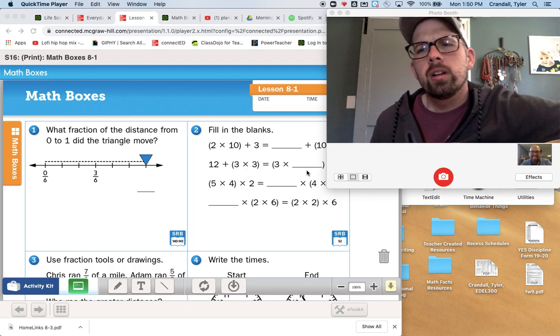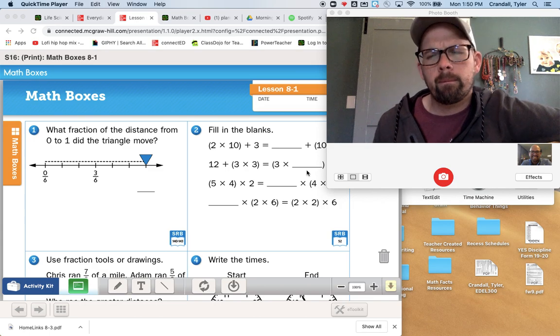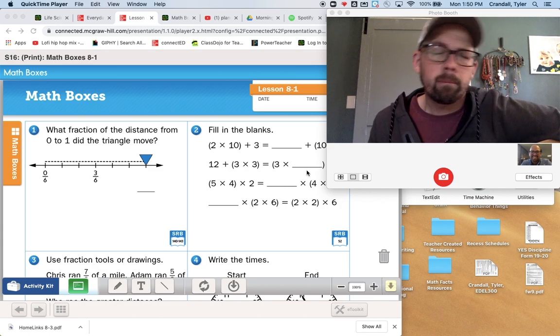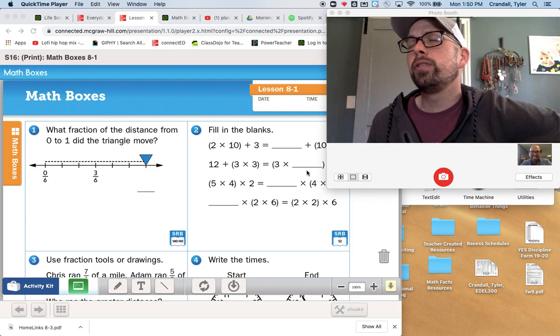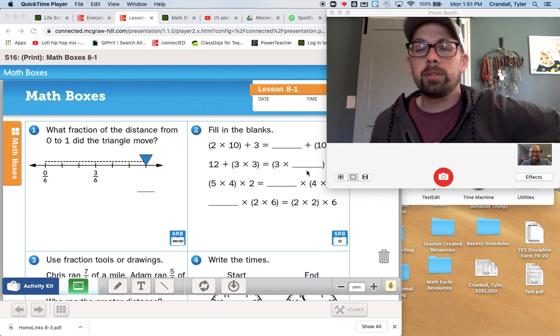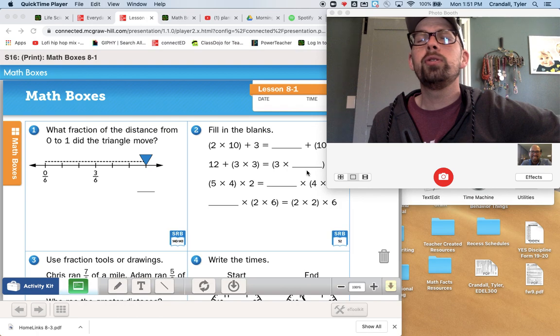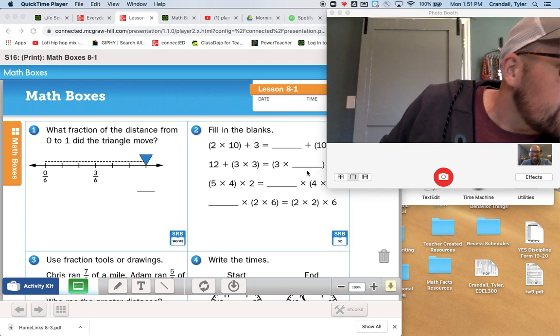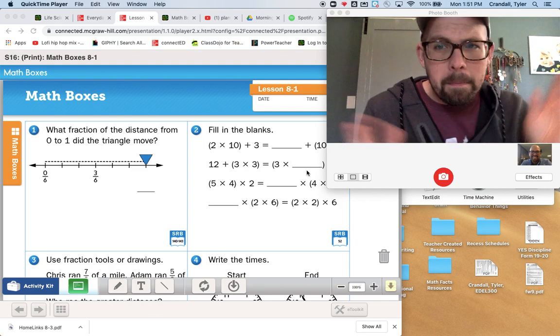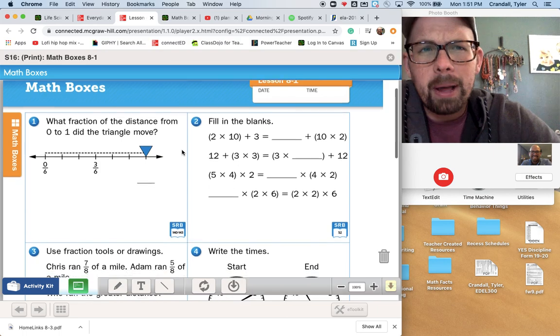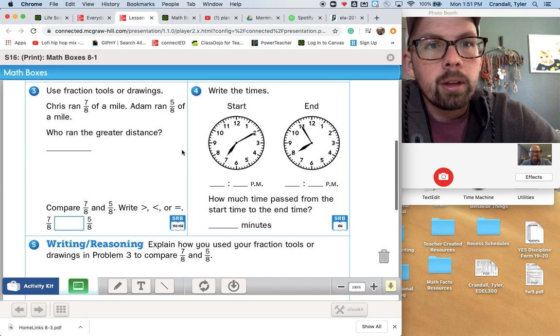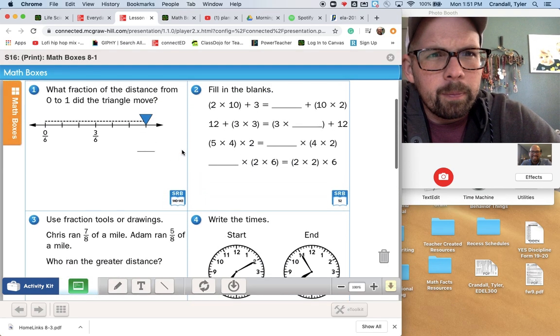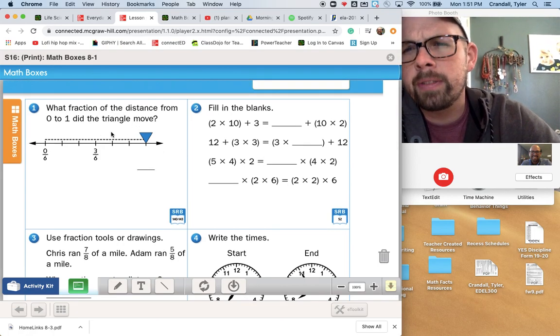The first problem says what fraction of the distance from 0 to 1 did the triangle move? Yeah, no, it's not better as a song. Sometimes you take risks and it pays off, and sometimes it doesn't. What fraction of the distance from 0 to 1 did the triangle move? By the way, this is in your Math Journal, page 254. So if you don't have that ready yet, get it out, and let's go.